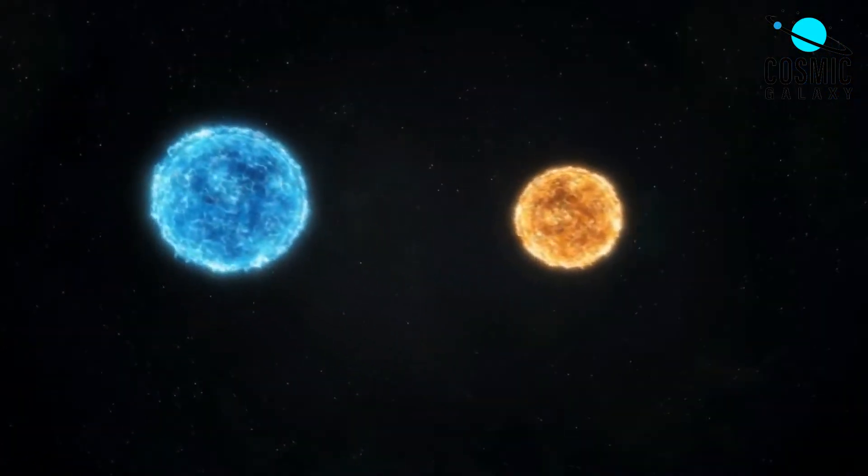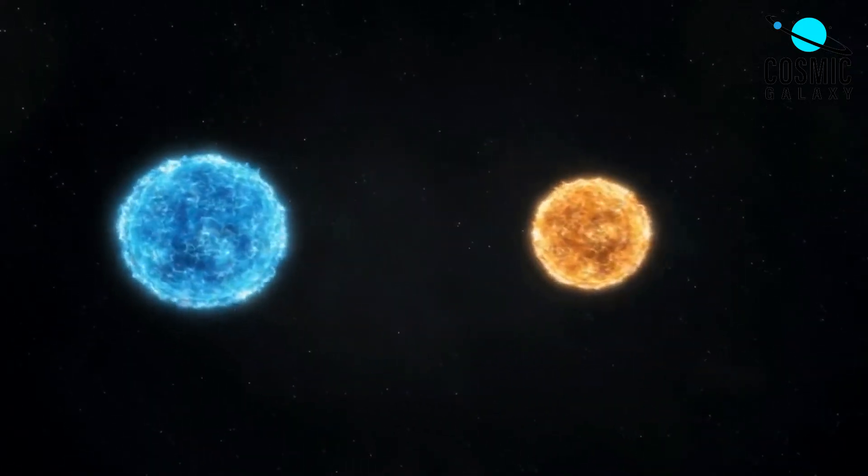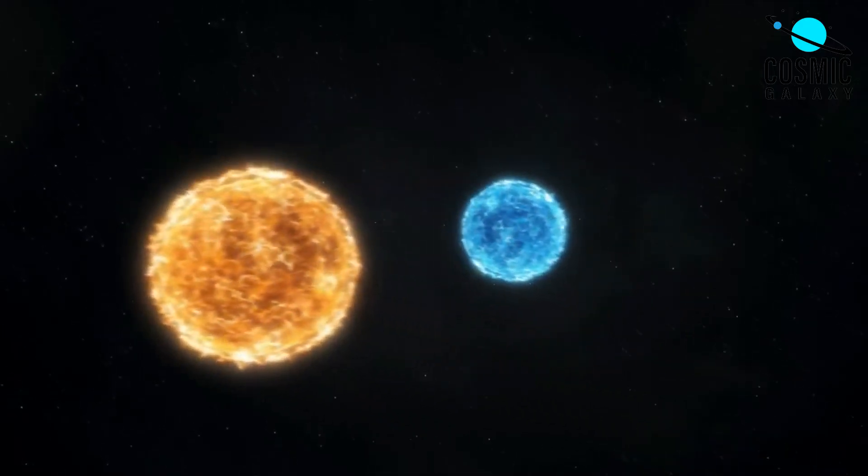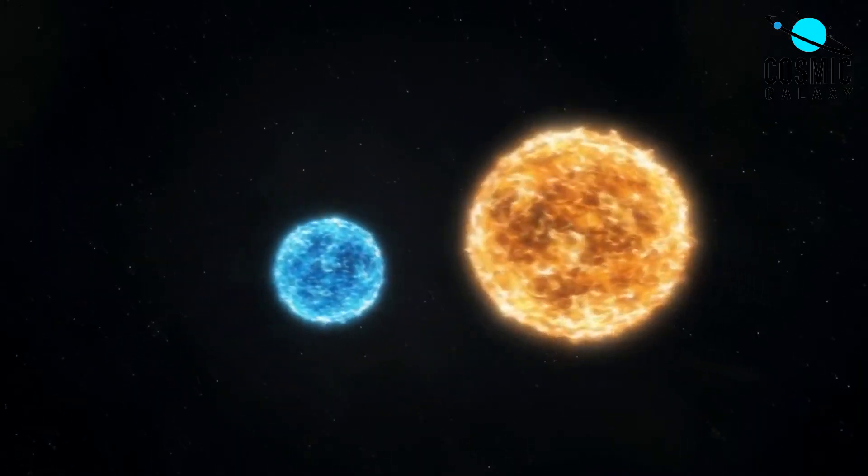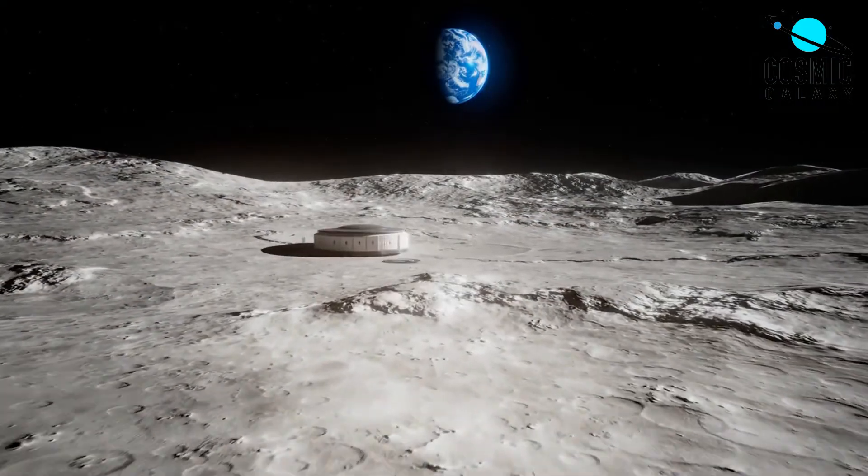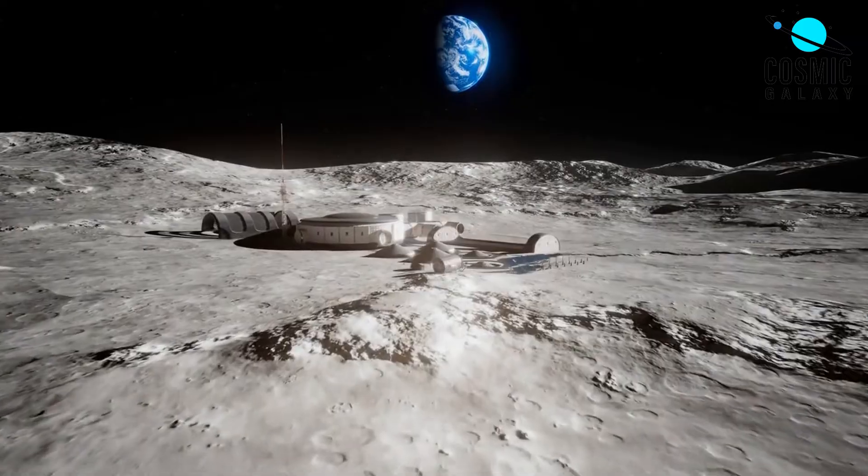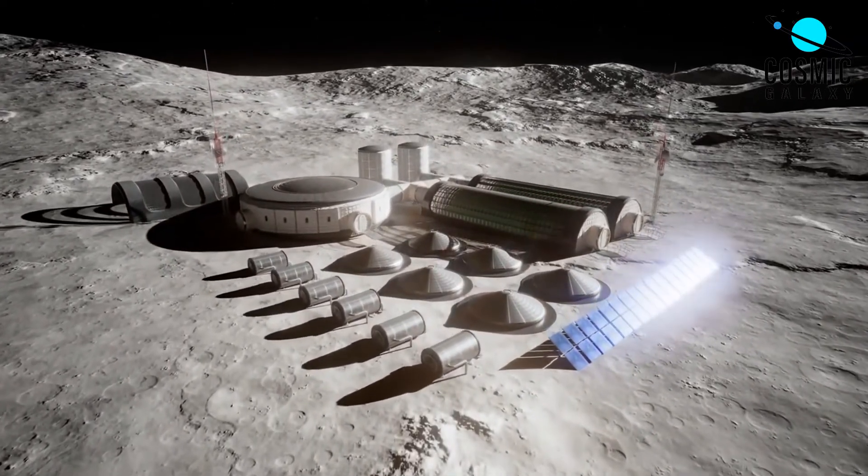Eventually, the heat generated by these collisions caused the planetesimals to melt, allowing heavier materials like iron to sink to the core, and lighter materials like silicates to rise to the surface. This process, known as planetary differentiation, resulted in the formation of the dense, metallic core of rocky planets surrounded by a rocky mantle and crust.